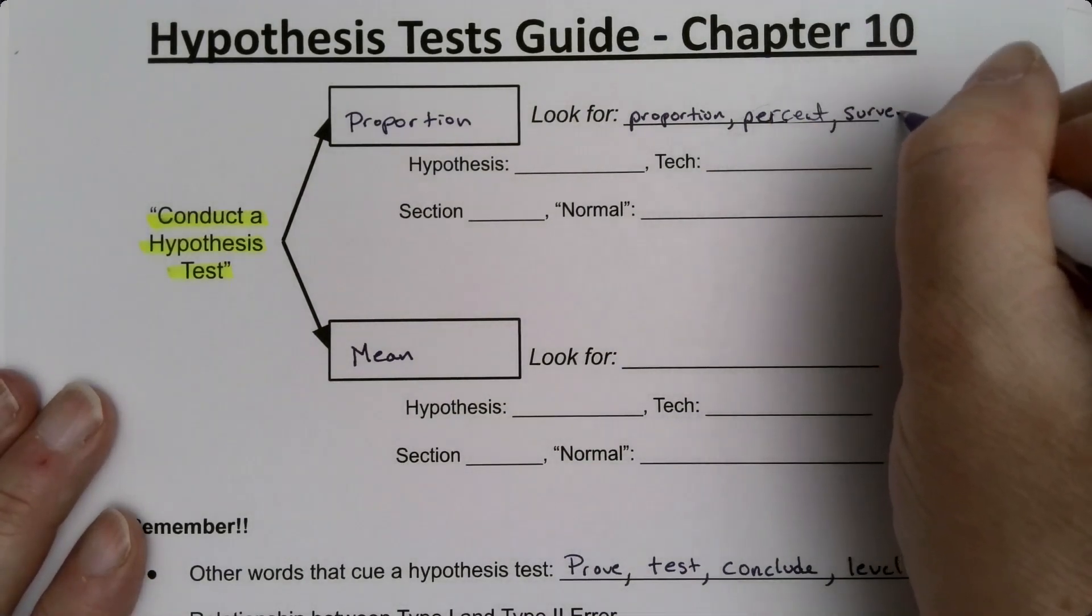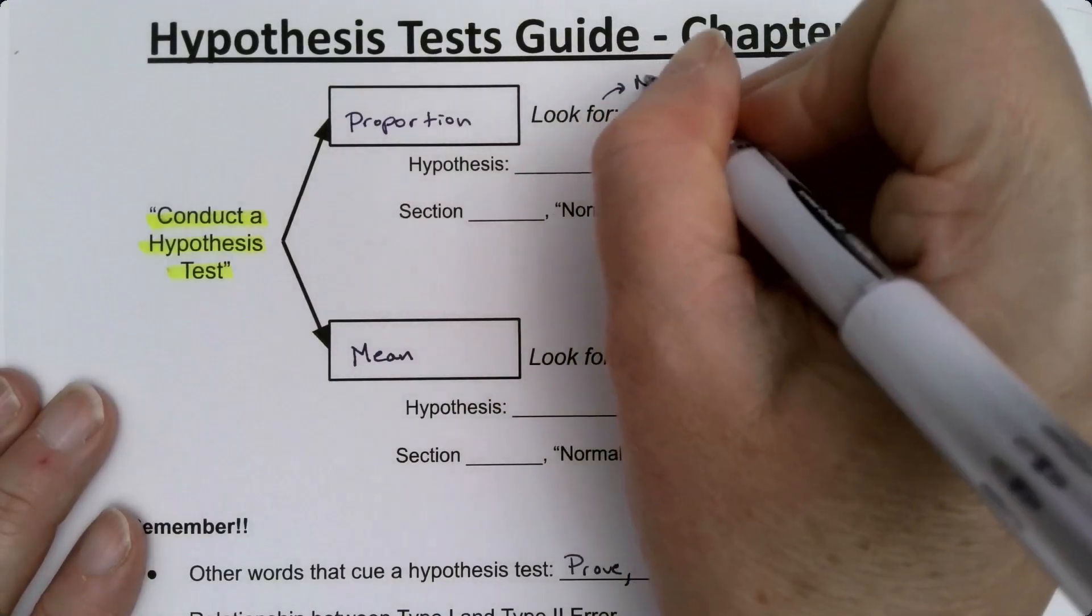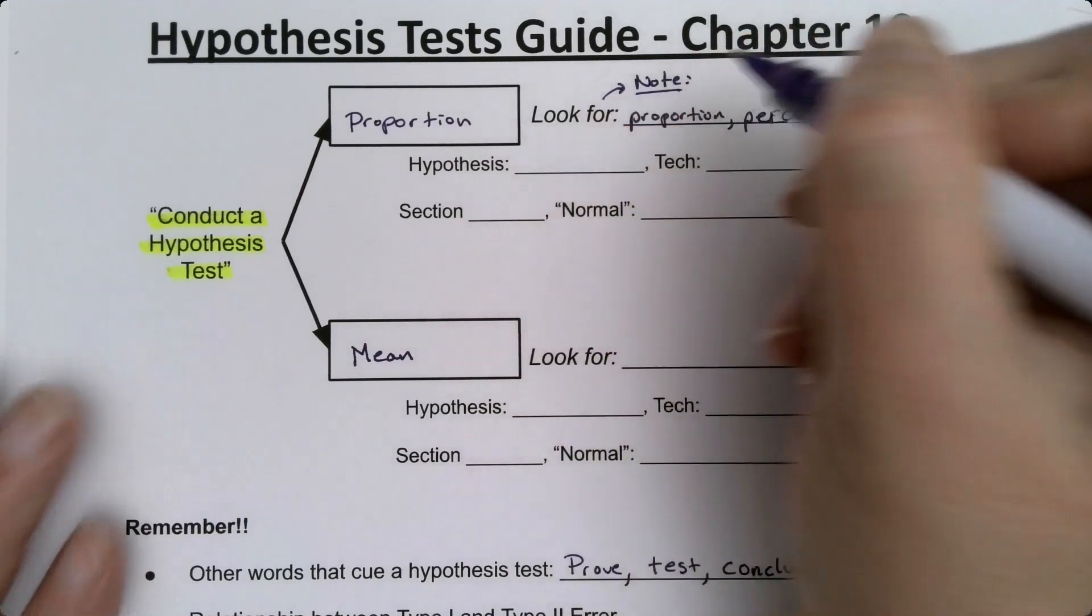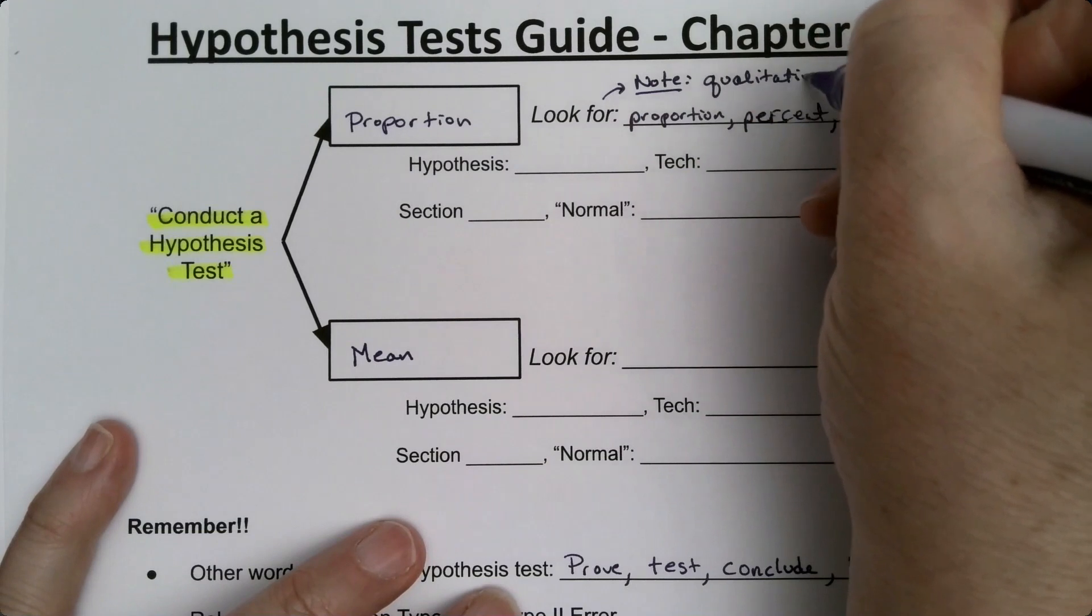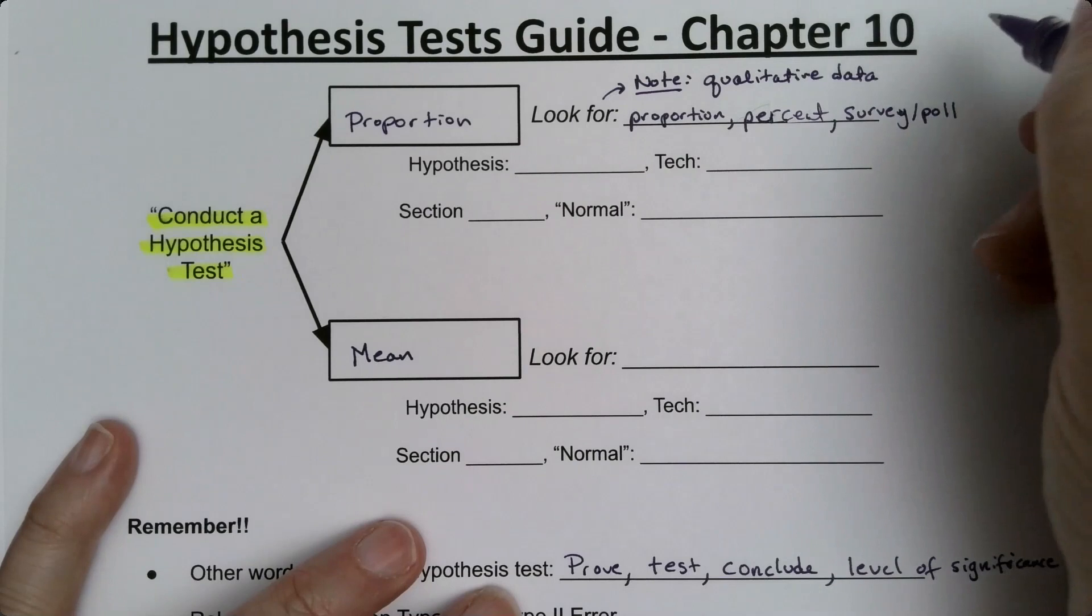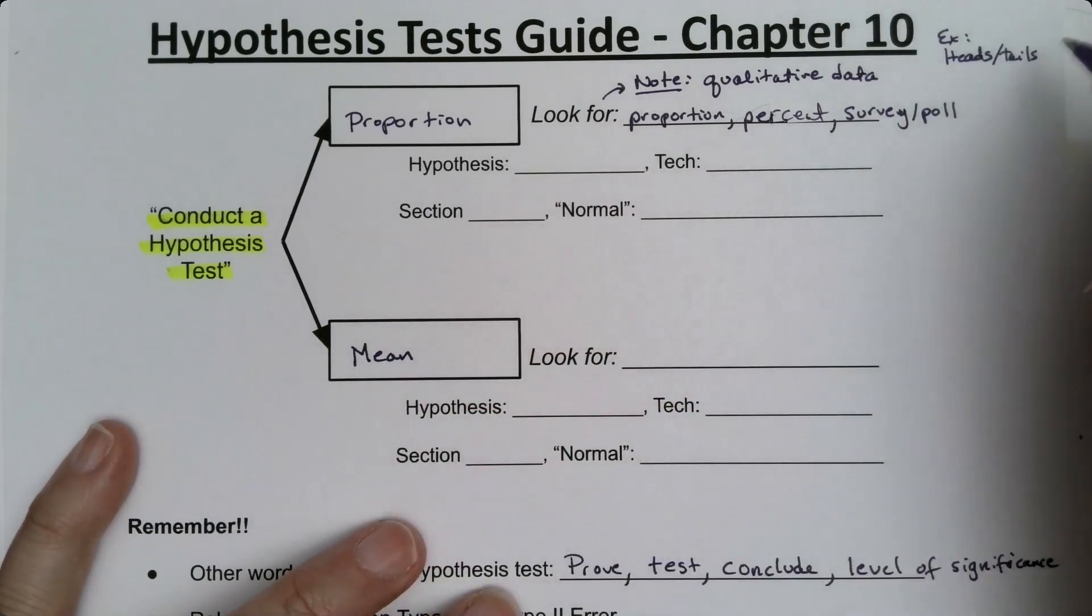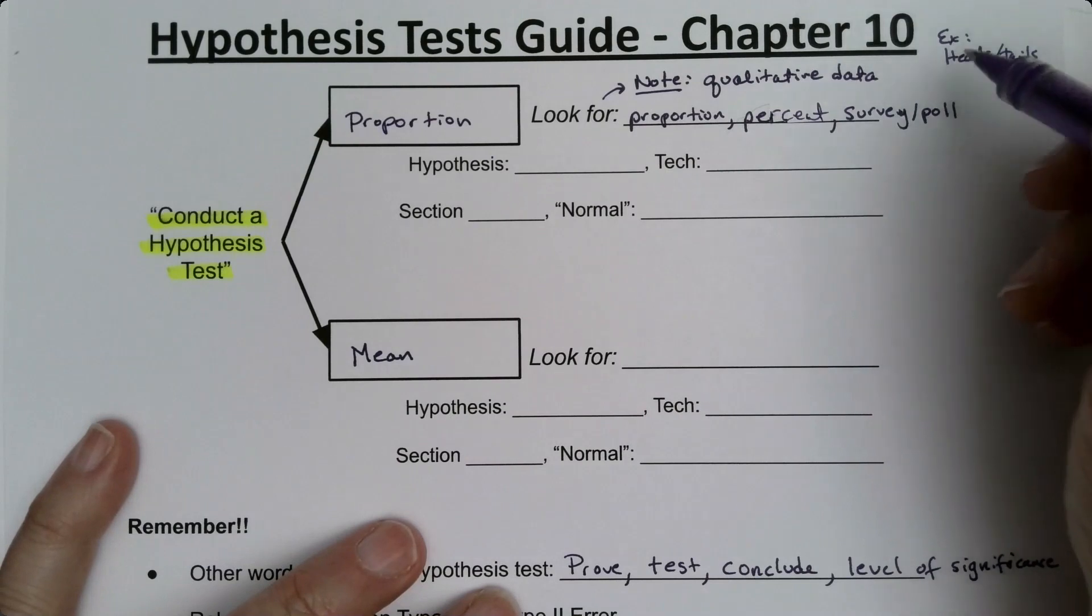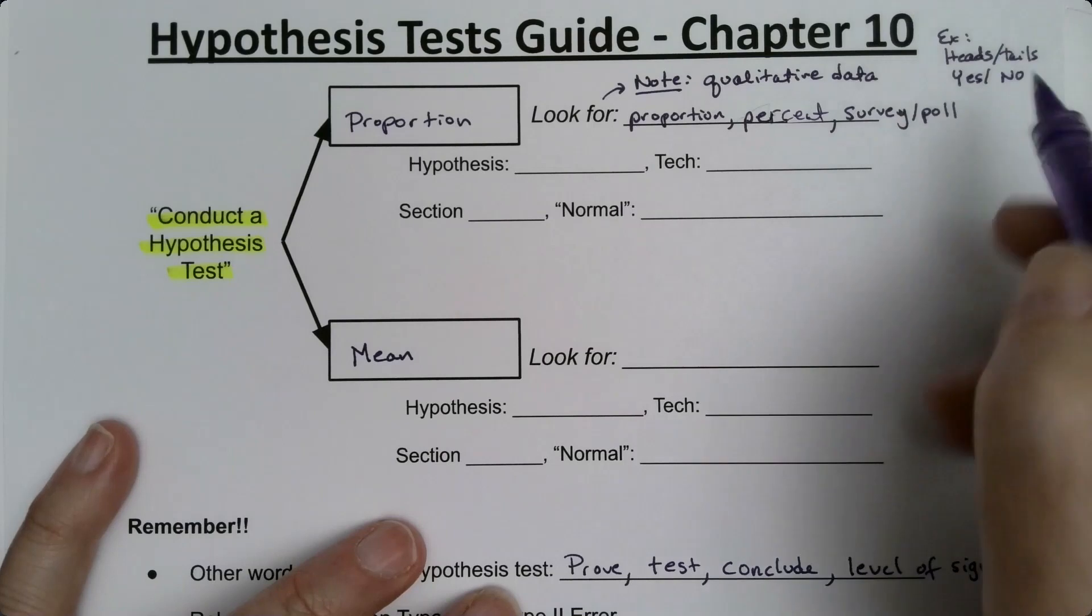Survey or poll, and actually one other thing to note: if it's qualitative data, that's percentages, that's proportions. What do I mean? Well, if you're talking about a coin, heads versus tails, then the proportion of heads—heads would be your success, or tails would be your success—and you can turn that into a percentage of heads. Or if you do yes/no questions, that's the most common one.